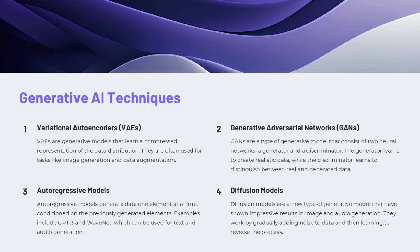Generative adversarial networks, GANs, are another type of generative model consisting of a generator and a discriminator network. The generator learns to create realistic data, while the discriminator learns to distinguish between real and generated data. GANs have shown impressive results in generating high-quality images, but can be challenging to train.